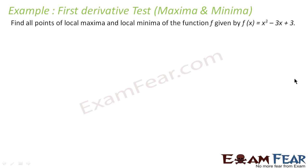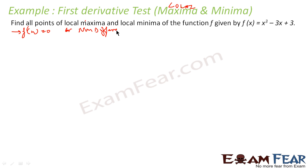For example, using the first derivative test we have to find the local maximum and minimum for this function. Since this is an open interval function, local maximum and minima can happen at f'(x) = 0 or at non-differentiable points. Since it is a continuous function, there are no non-differentiable points. So the only thing is to find all points where f'(x) = 0 — the critical points.